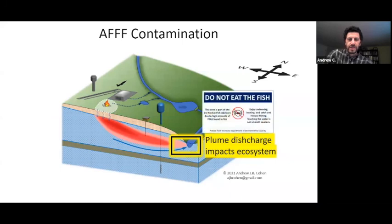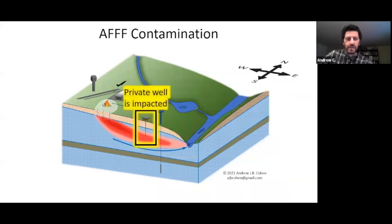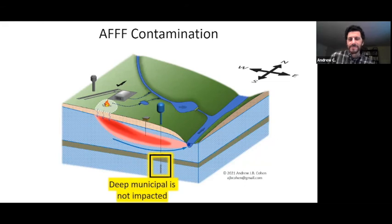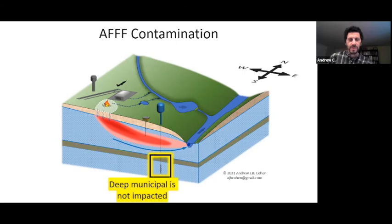This plume is discharging to surface water, potentially impacting the ecosystem. The private well is being impacted because it's screened right into the plume. However, the municipal well in this case is screened deep in a confined aquifer that's hydraulically isolated from the shallower groundwater, so the municipal water supply is not being contaminated. That's not always the case — there are locations where the municipal water supply has been impacted. Impacts are typically closer to airports and military bases, but plumes can extend over distances of kilometers.